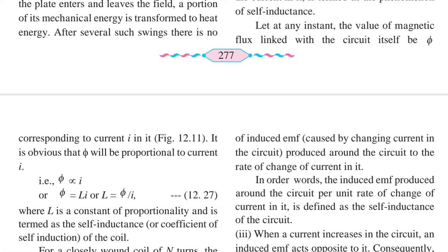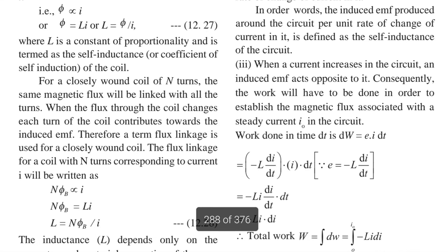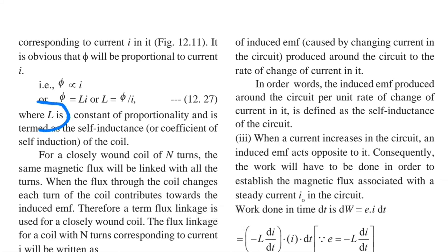φ will change with the change in current, so φ is proportional to I. To remove the proportionality sign, a constant of proportionality L is introduced. The equation becomes φ = LI, or equivalently L = φ/I.